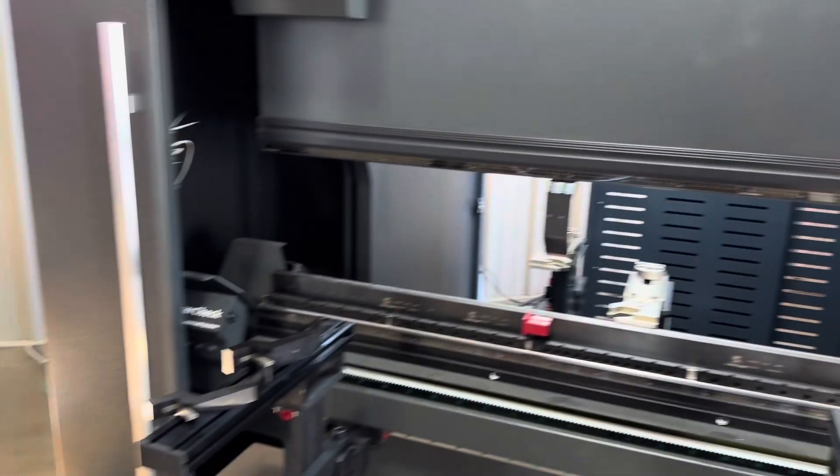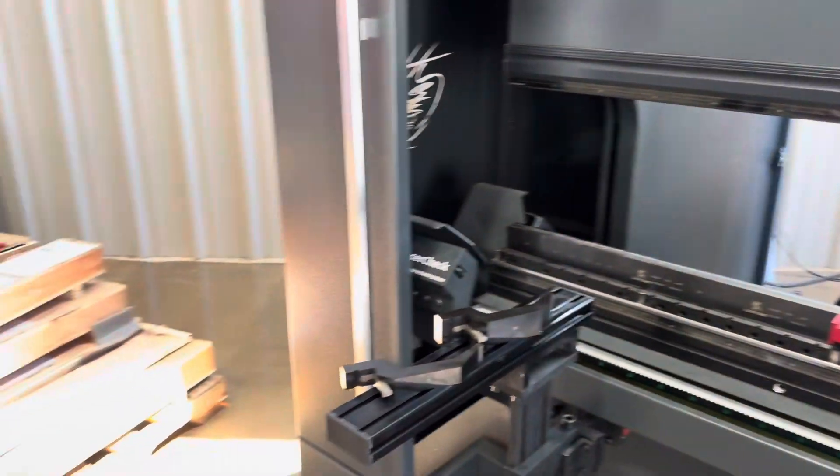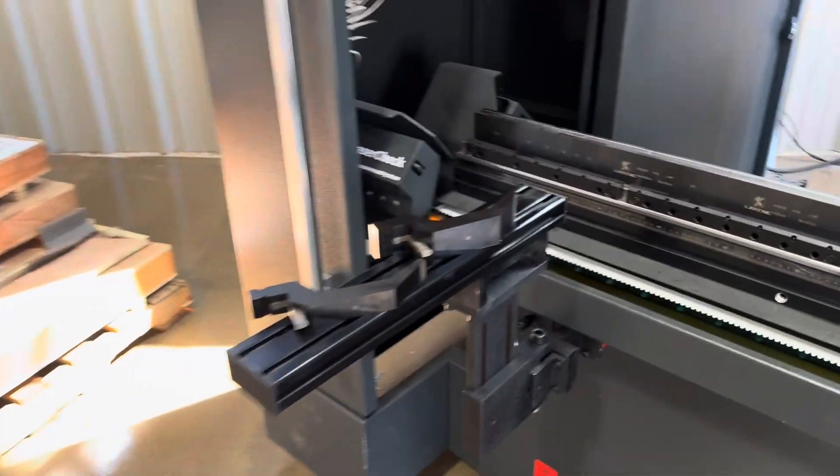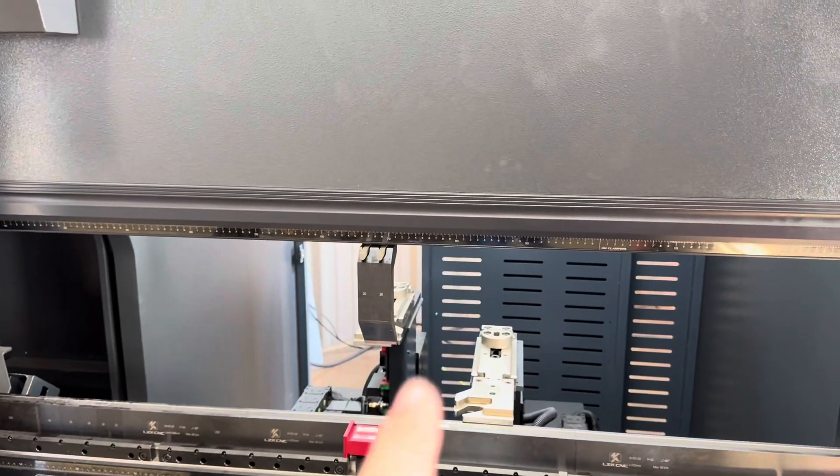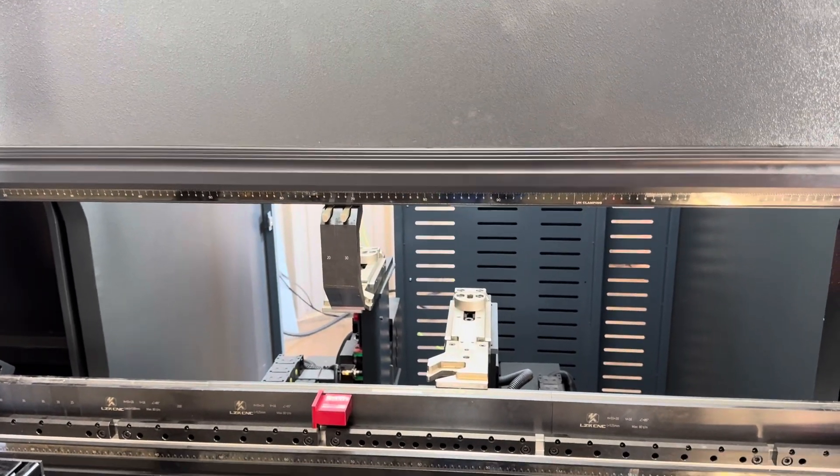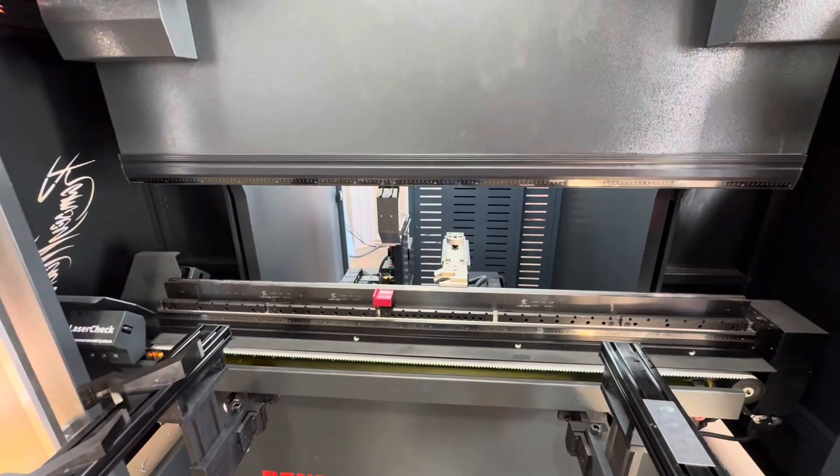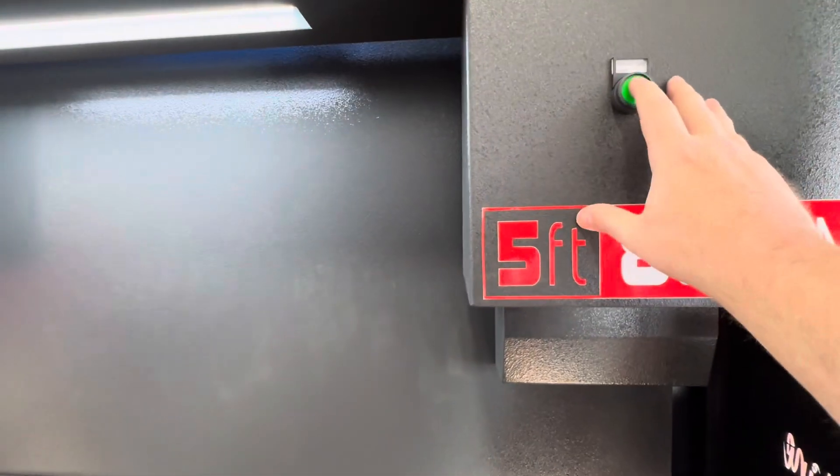So as I mentioned, this machine comes with this full palette of tooling, including gooseneck punches. And it has the Willis style hydraulic punch clamp system, which is super nice. So basically you open and close the hydraulic system here. That lets you move everything freely.